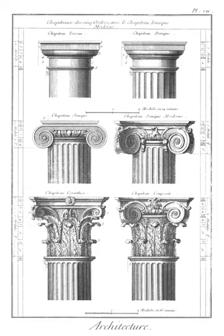Batter: upwardly receding slope of a wall or column. Battlement: a parapet — a defensive low wall between chest height and head height — in which rectangular gaps or indentations occur at intervals to allow for the discharge of arrows or other missiles.